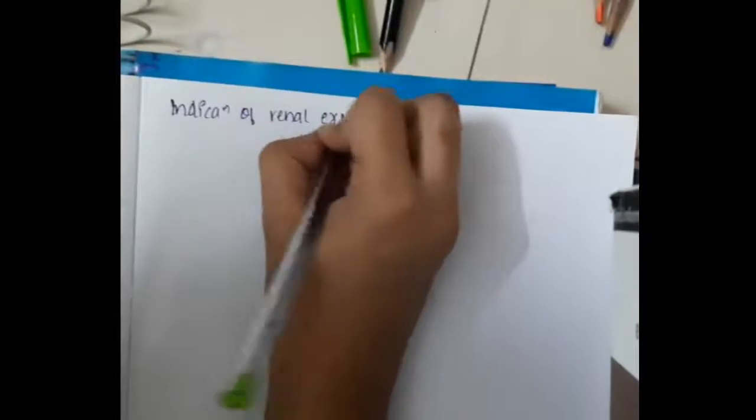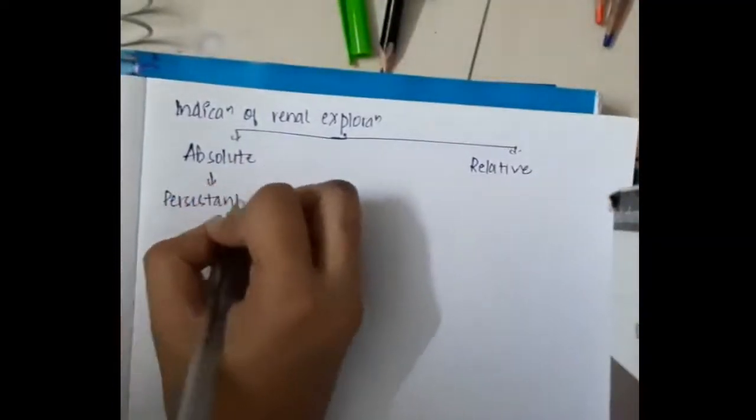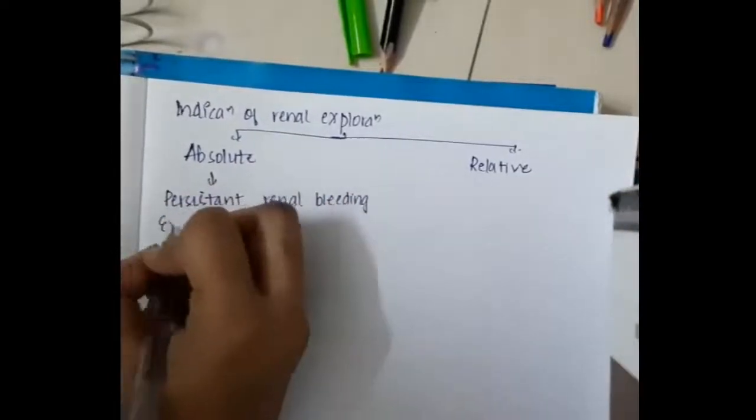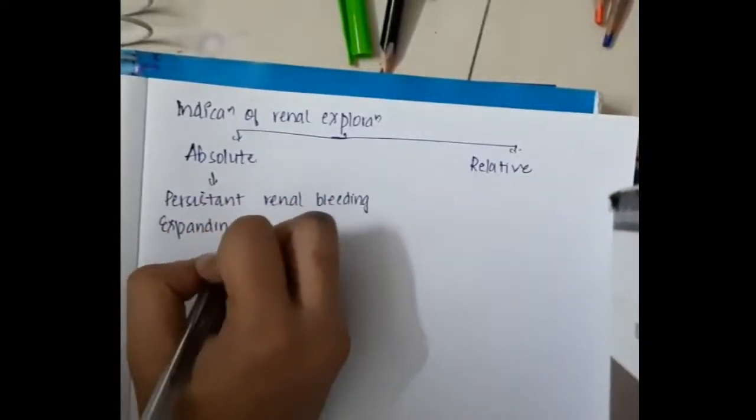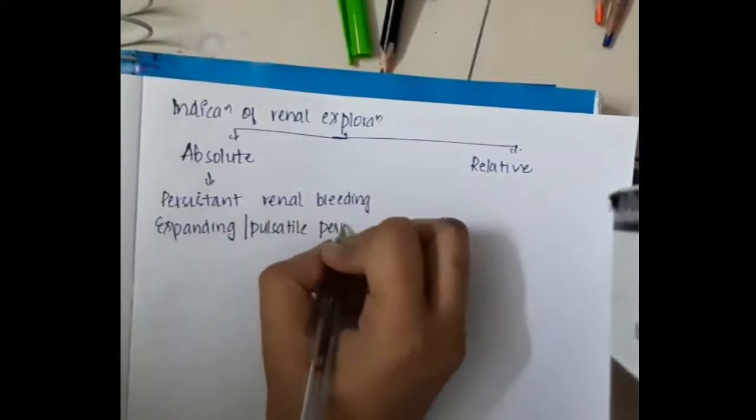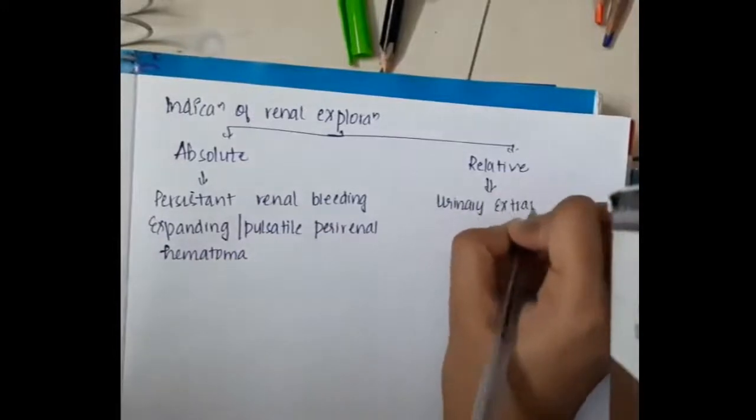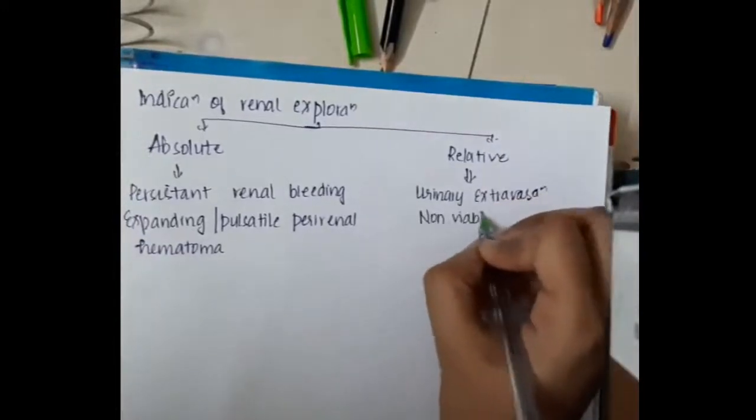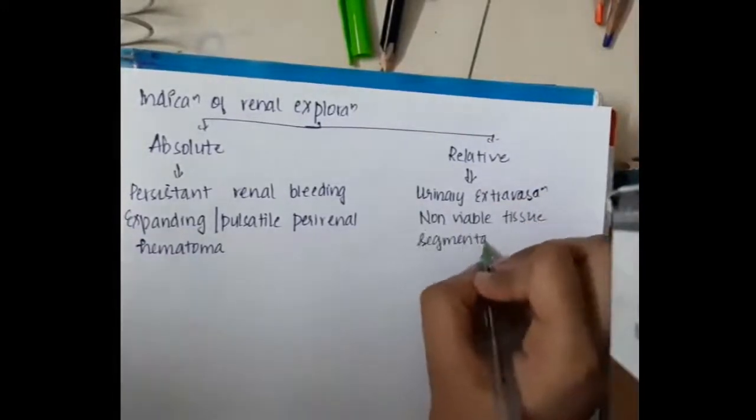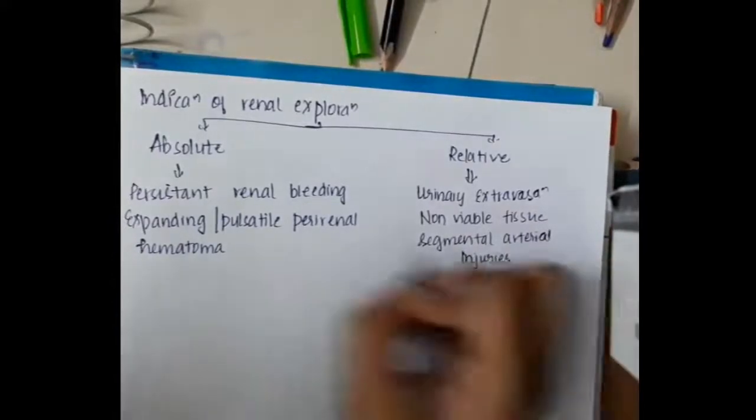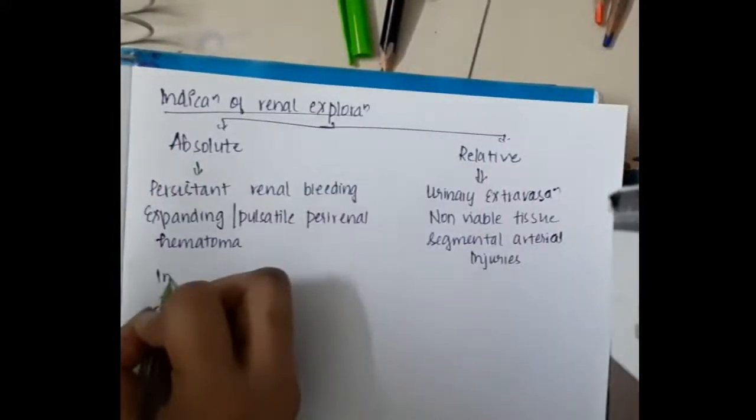Indications of renal exploration can be absolute indications and relative indications. Absolute indications is persistent renal bleeding, expanding or pulsatile perirenal hematoma. Relative indications include urinary extravasation, non-viable tissue and segmental arterial injuries. These are the indications of renal exploration.